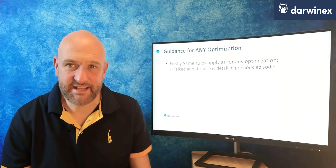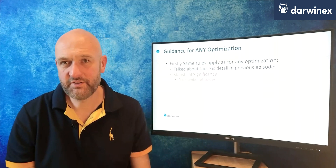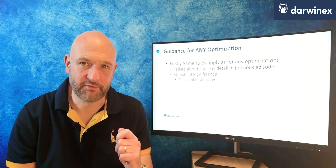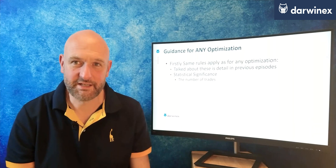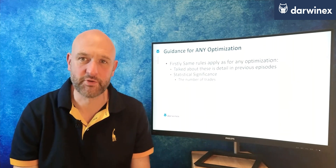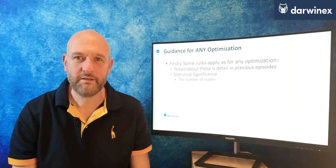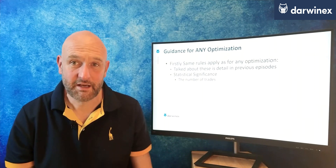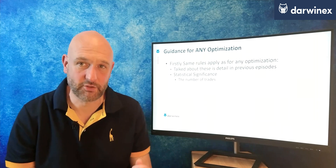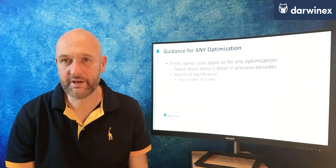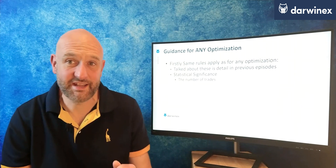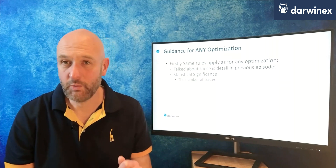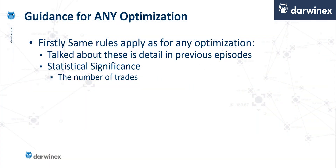So when undertaking any type of optimisation, the first thing that you should always have at the forefront of your mind is statistical significance. Without statistical significance, the whole optimisation process can be completely useless. This revolves mainly around the number of trades in your optimisation phase and also in your walk-forward validation phase. If there are too few trades in either of those, you will not be getting the most out of your optimisation process — and the same applies to walk-forward analysis.